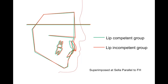The red line for lip incompetent subjects clearly showed the anterior position of both the upper and lower incisors relative to the facial plane as compared to the green line for lip competent subjects. So far, it has been clarified that the anterior and posterior stable positions of incisors differ depending on the lip closure state, even if all of the subjects have normal occlusion.